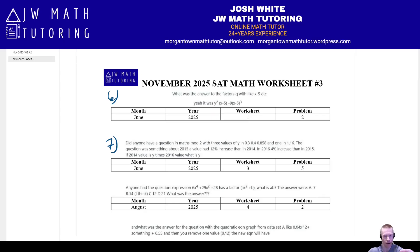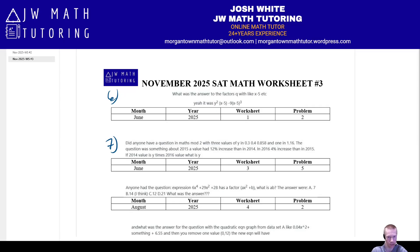Question seven deals with percentage increases. You start with some number, it increases by a certain percent one year, then increases or decreases by another percent the following year. It then asks you to relate the starting year — say 2014 — to the ending year, like one equals Y times the other. It could be set up either way. Check out June 2025, worksheet three, problem five for a similar example.